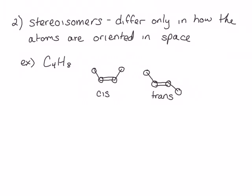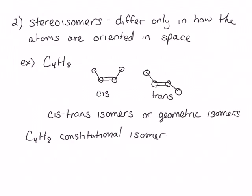More specifically, these are called cis-trans isomers, or geometric isomers. An example of a constitutional isomer with the same molecular formula could look like this. This molecule has the same molecular formula, but differs in the order of attachment of atoms, specifically sp2, sp2, sp3, sp3.